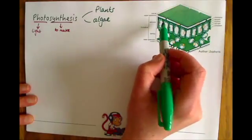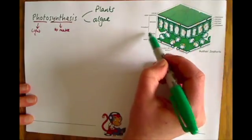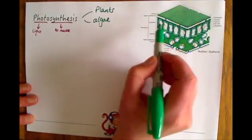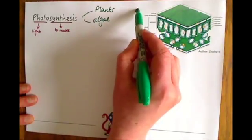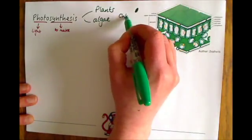Inside this layer of palisade cells here, which is part of the mesophyll, these cells will be full of chloroplasts, which are often drawn as just little green circles like that.